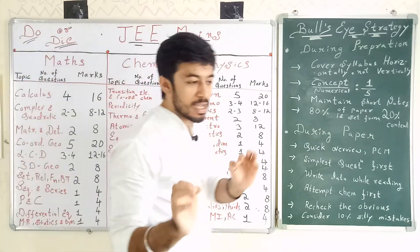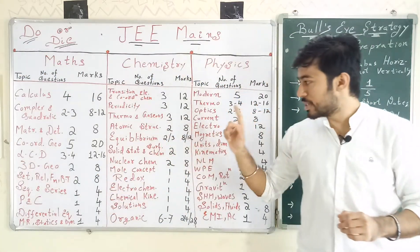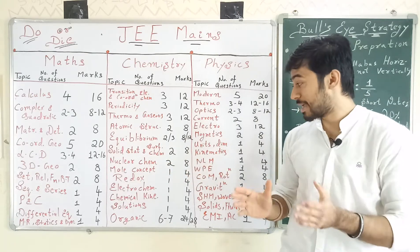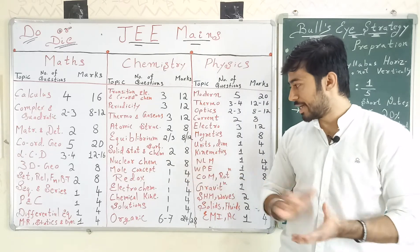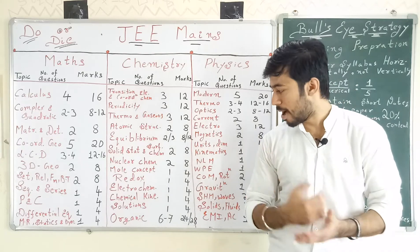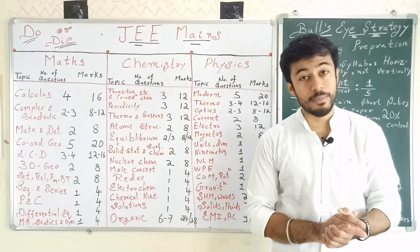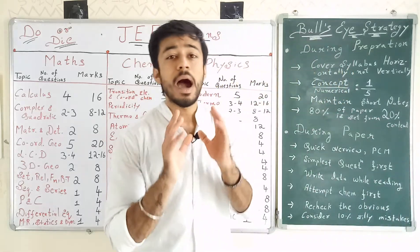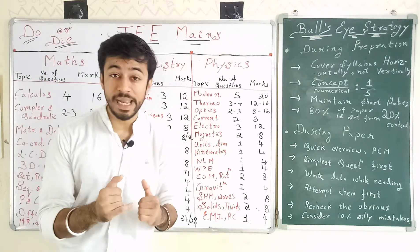Atomic Structure — 2 questions, 8 marks. Equilibrium — consists of both ionic and chemical equilibrium — 2 to 3 questions, 8 to 12 marks. Solid State and Surface Chemistry — 2 questions, 8 marks. Nuclear Chemistry — 2 questions, 8 marks. Mole Concept — 1 question, 4 marks. Redox — 1 question, 4 marks. Chemical Kinetics — 1 question, 4 marks. Solutions and Colligative Properties — 1 question, 4 marks.